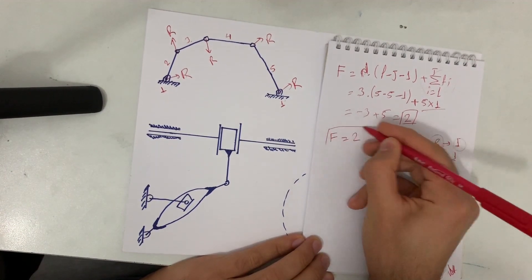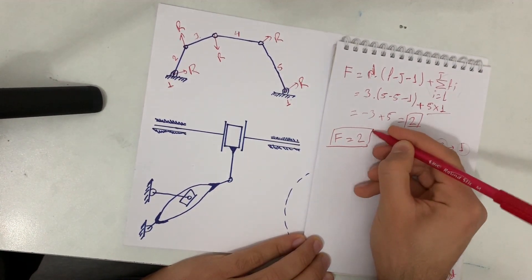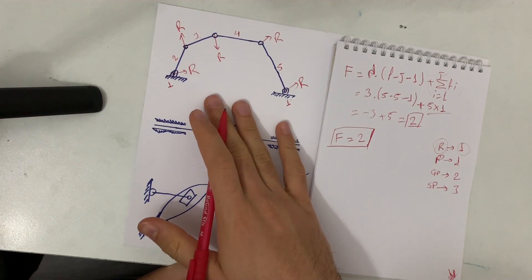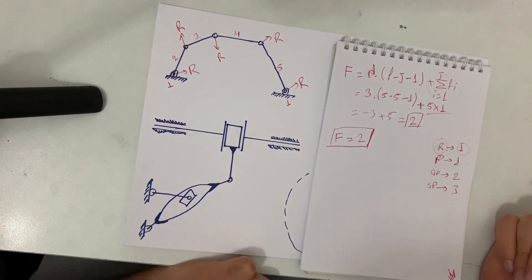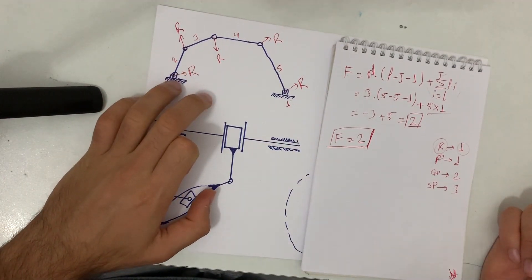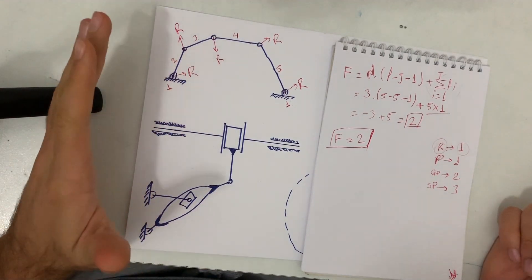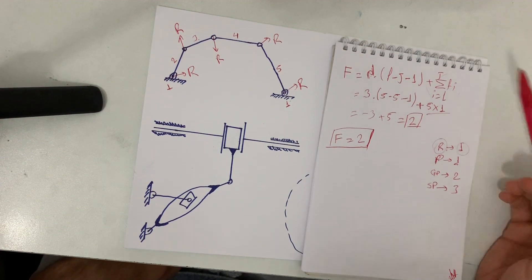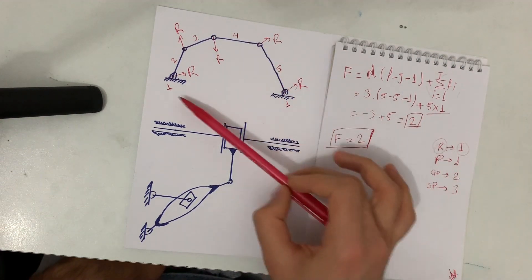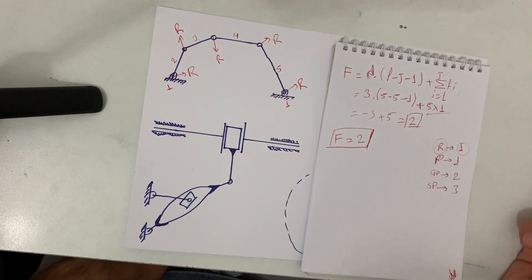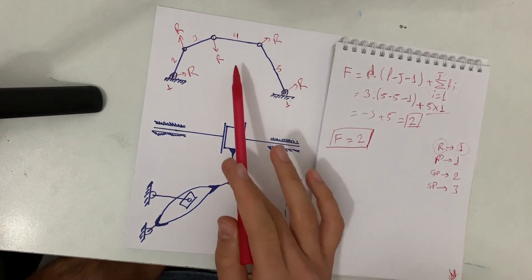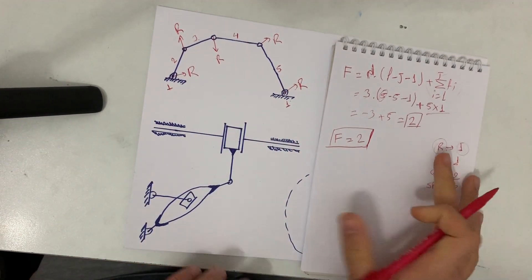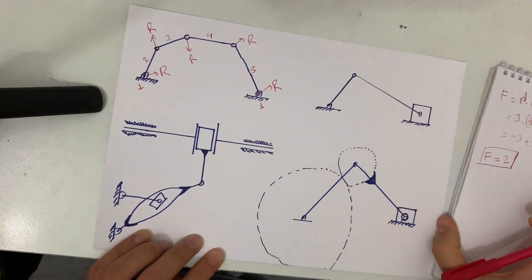So F = 2 for this example. This is a basic mechanism and it is called a five-bar mechanism because of the number of links. It is very common in mechanism classes and is widely used by engineers in real life.